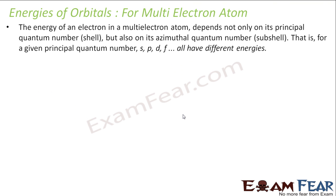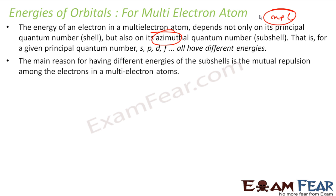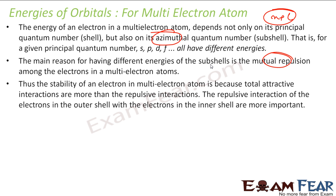For a multi-electron atom, the energy does not depend on N alone — it also depends on L. That is, N plus L defines the energy of the multi-electron atom. The main reason is the mutual repulsion that exists among the electrons in the multi-electron atom, which is why L also comes into the picture.